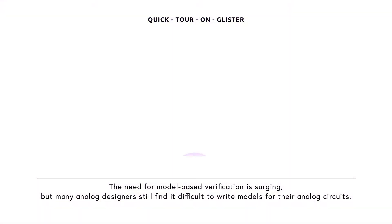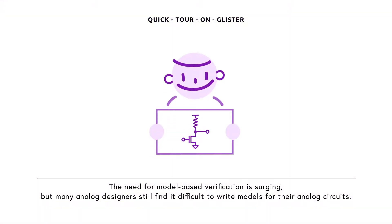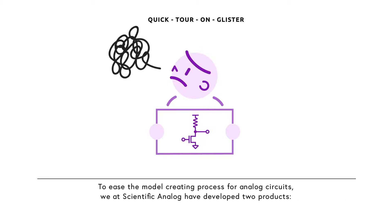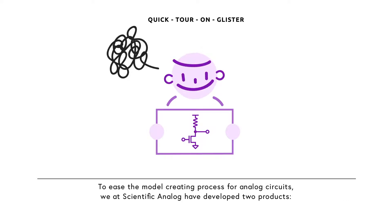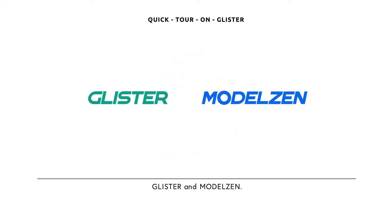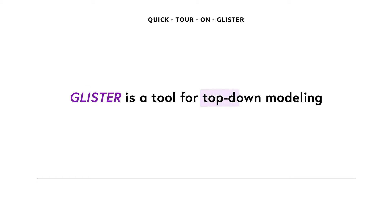The need for model-based verification is surging, but many analog designers still find it difficult to write models for their analog circuits. To ease the model-creating process for analog circuits, we at Scientific Analog have developed two products, Glister and ModelZen. Among them, Glister is a tool for top-down modeling.